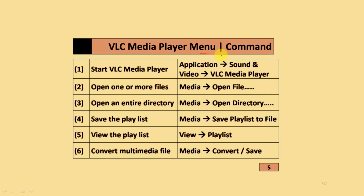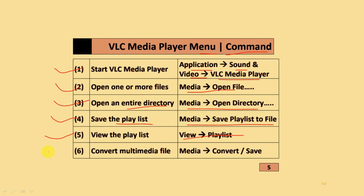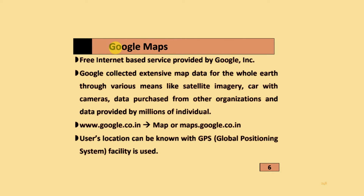VLC media player's different menus and commands: To start the media player, go to Application, Sound and Video, and VLC Media Player. To open one or more files, go to Media and Open File. To open an entire directory, go to Media and Open Directory. To save the playlist, go to Media and Playlist to File. To view the playlist, go to View and Playlist. To convert a multimedia file, go to Media and Convert and save the converted file.